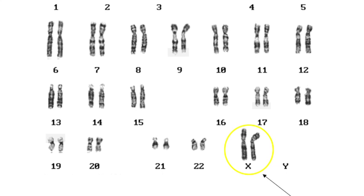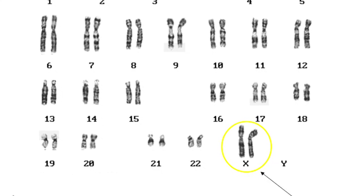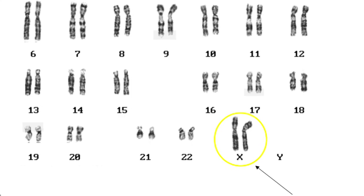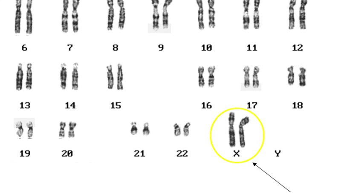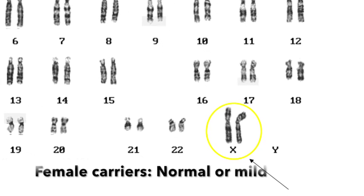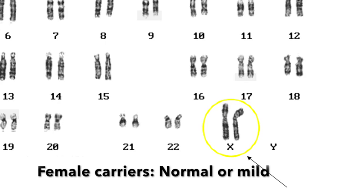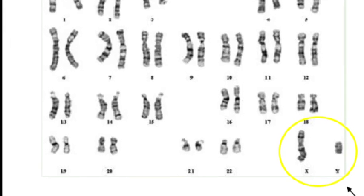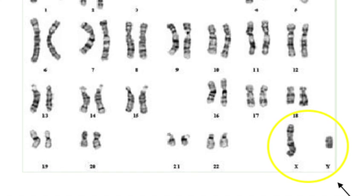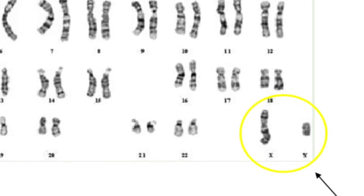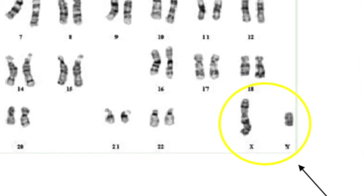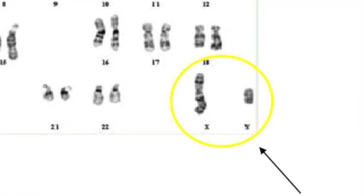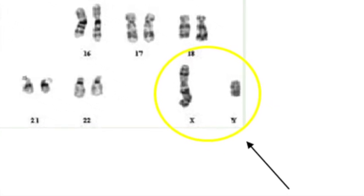X-linked recessive inheritance is due to a mutation in a gene on the X chromosome. Females have two X chromosomes, so a change on one is compensated for by the second normal copy — therefore females normally don't have symptoms, and if they are present they tend to be mild. Males only have one X chromosome together with a Y chromosome, so if there's a change in the gene on the X chromosome they don't have a normal copy to compensate, and they tend to have much more severe and early-onset symptoms than carrier females.